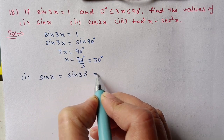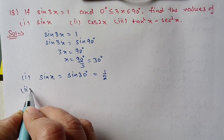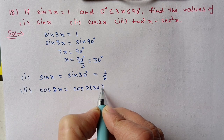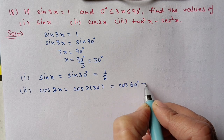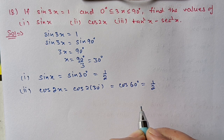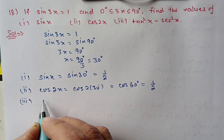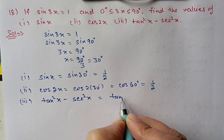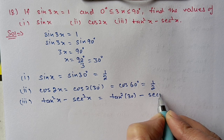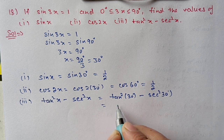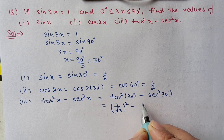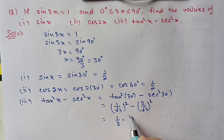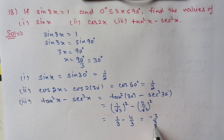First, find sin x, which is sin 30 degree. Sin 30 degree value is 1 by 2. Second, find cos 2x, which is cos 2 times 30, meaning cos 60 degree. Cos 60 is 1 by 2. Third, find tan squared x minus sec squared x: tan squared 30 minus sec squared 30. Tan 30 value is 1 upon root 3 and sec 30 value is 2 upon root 3. After squaring: 1 by 3 minus 4 by 3 equals minus 3 by 3, which is minus 1.